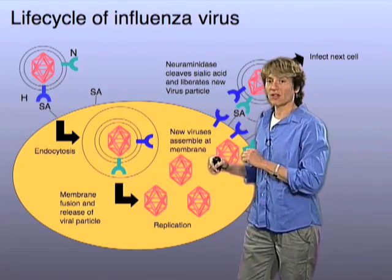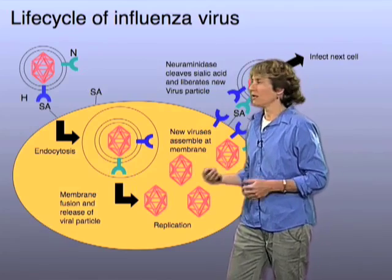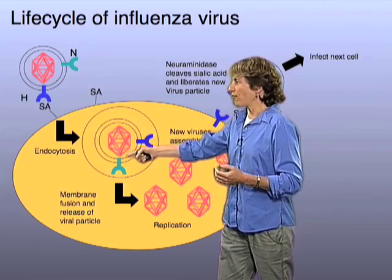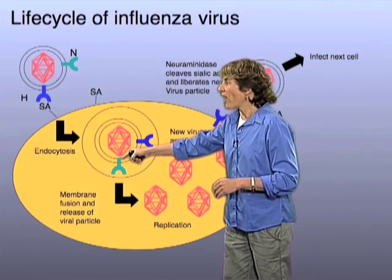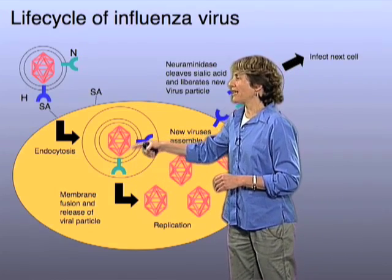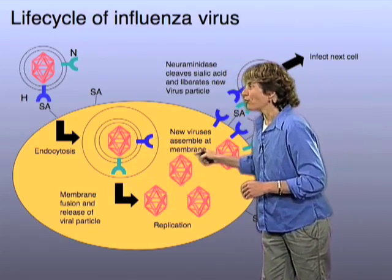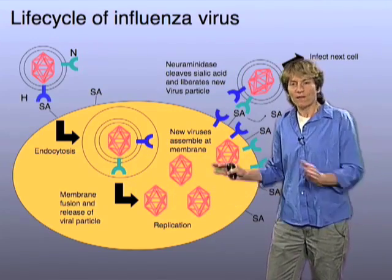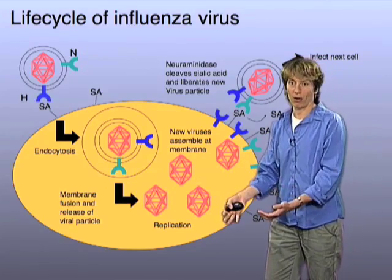Once that occurs, it triggers an endocytosis event where the host cell inadvertently engulfs the viral particle into a vesicle. The membrane of the virus fuses with the membrane of the vesicle and releases the nucleic acid into the cell, and now that viral nucleic acid takes over the machinery of the cell and forces the cell to generate more viral particles.